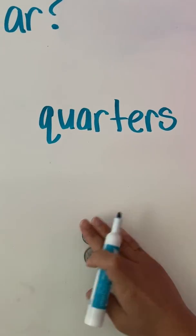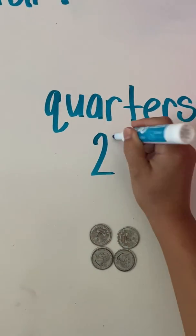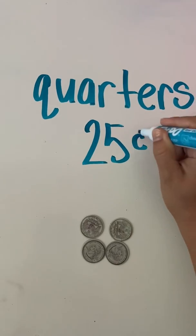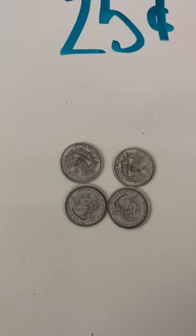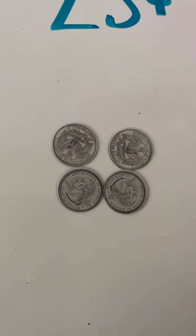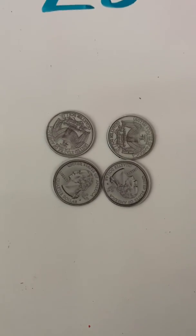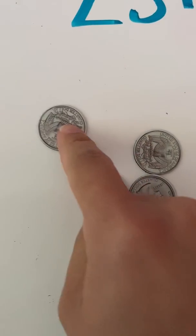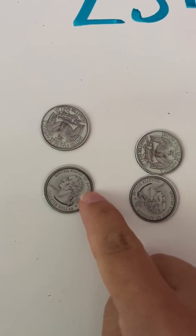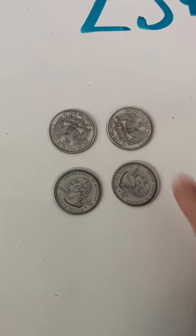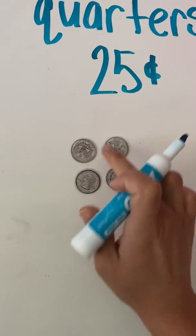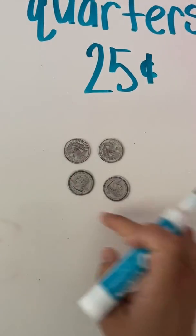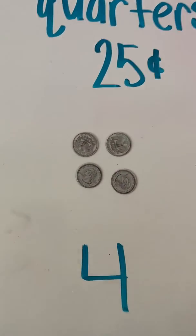Now I want to look at quarters. Quarters are worth 25 cents. Yes, quarters are worth 25 cents. And I count by 25. This one is not a usual way to count, so you're just going to have to keep practicing. 25, 50, 75, 100. It's a big number, so we get to 100 quickly. How many quarters did we use? Four quarters to make a dollar.